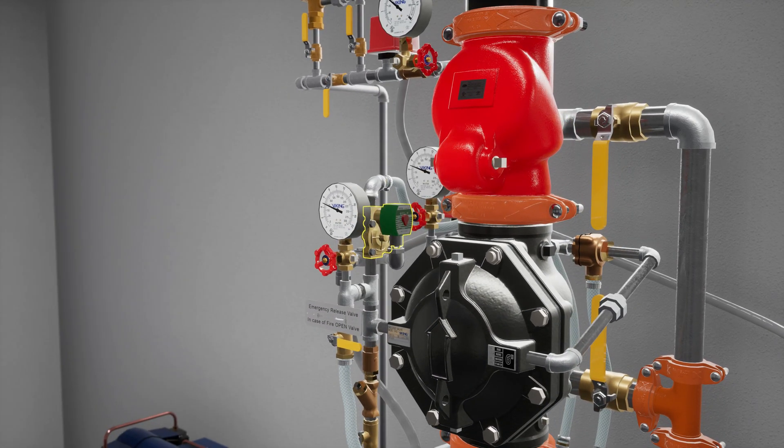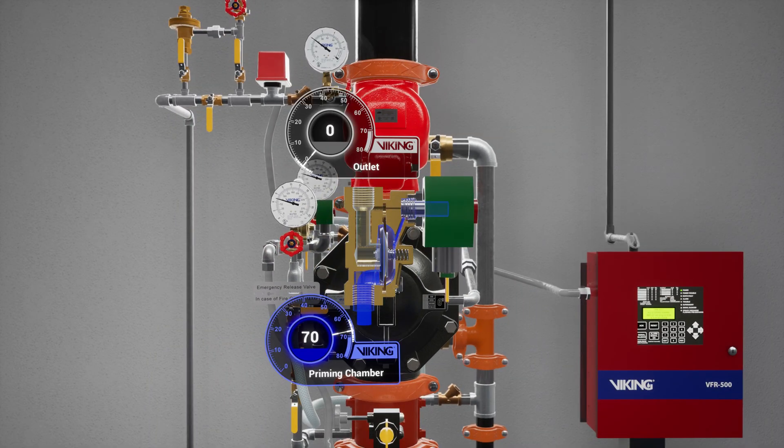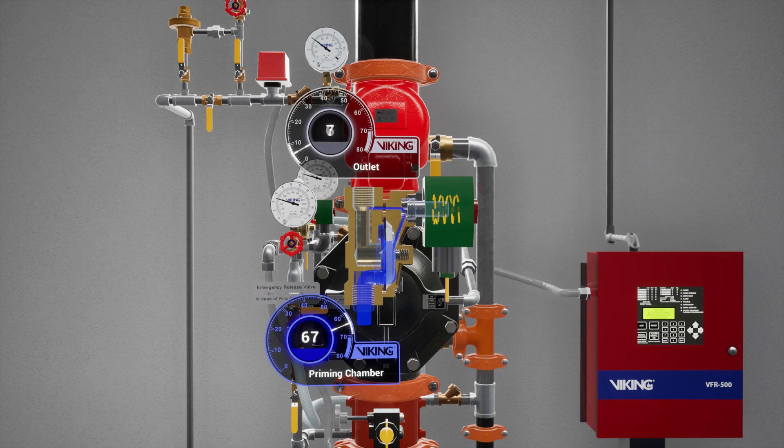The normally closed electric solenoid valve is attached to the top of the prime line. While closed, the solenoid valve keeps water pressure in the prime chamber. When activated open, it releases water pressure from the prime chamber.